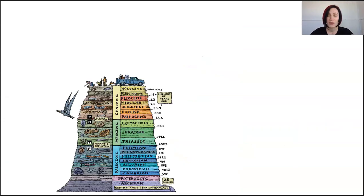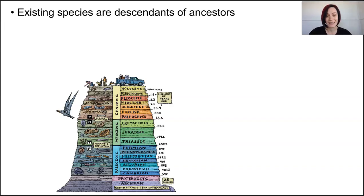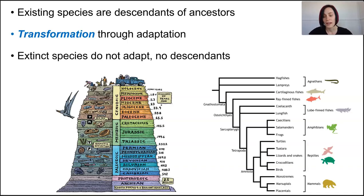The fossil record shows that nearly all the species that have ever lived on this planet are now extinct — they are the end of their evolutionary line. Species in existence today are direct descendants of some ancestral species, and some type of transformation has occurred as adaptation to the environment took place. Extinct species, on the other hand, do not undergo any of that transformative adaptation — they die out and leave no descendants.